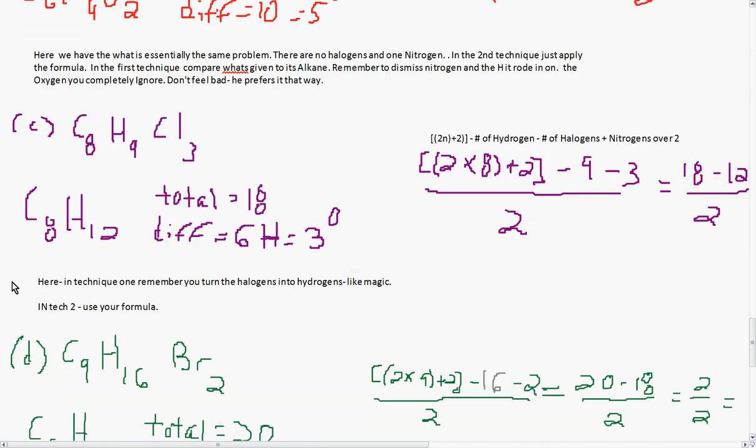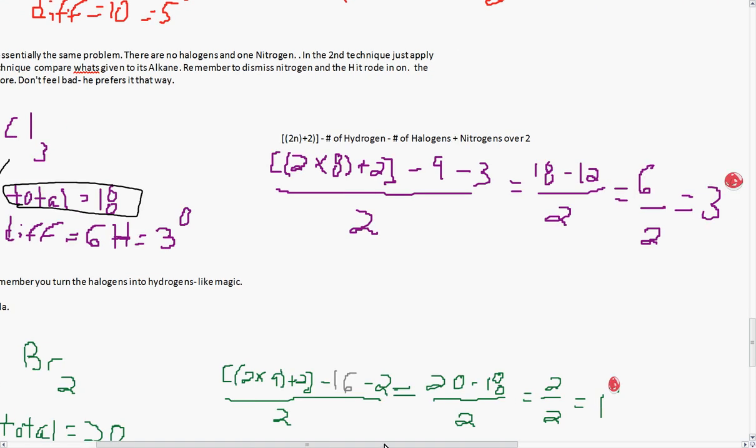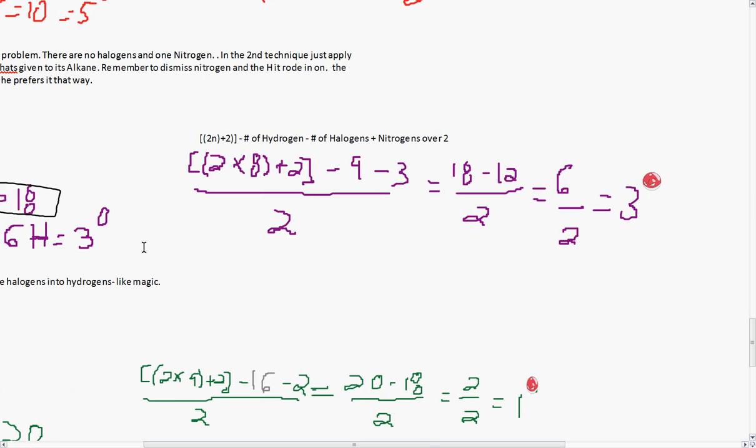In C, here in technique 1, remember that you turn the halogens into hydrogens, just like magic. And in technique 2, you use your formula. So here are your chlorines. They're going to turn into hydrogen. And your alkane, you have a total of 18, which gives you a difference between 18 and 12 of 6. Every 2 hydrogen is 1 degree, so that gives you 3 degrees. And then here, you just plug in your N, chug it out, gives you your 3 degrees. So that's your 2n plus 2, minus your hydrogens and halogens, then you add back in your nitrogens. Divide that by 2, and you have your 3.